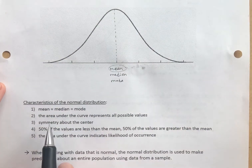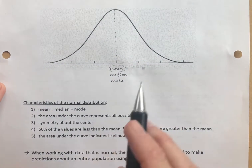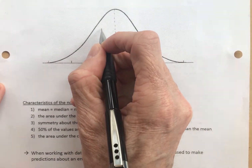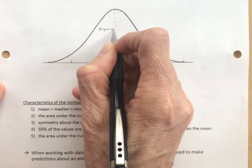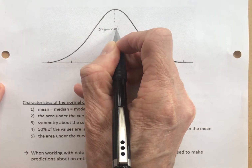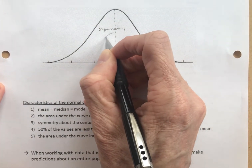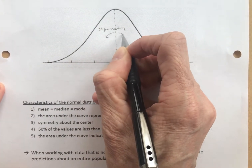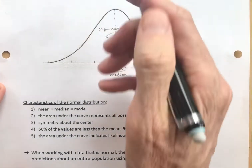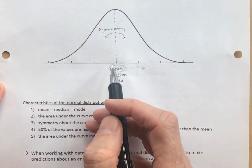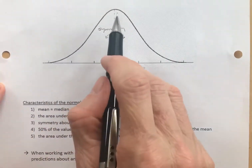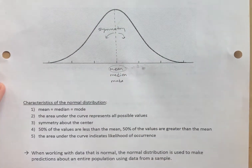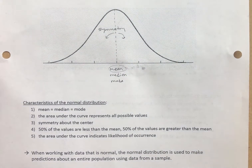This graph has symmetry about the center. This side and this side match up. If that line here is the line of symmetry, I could fold it over on that line and it would match up on the other side. So, this graph is symmetrical, which is extremely useful in a number of areas.